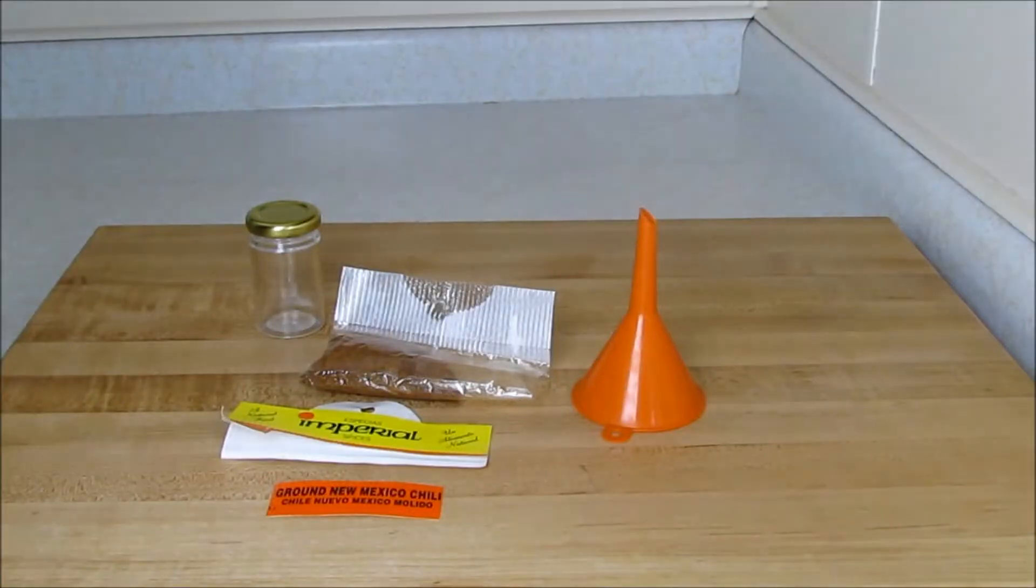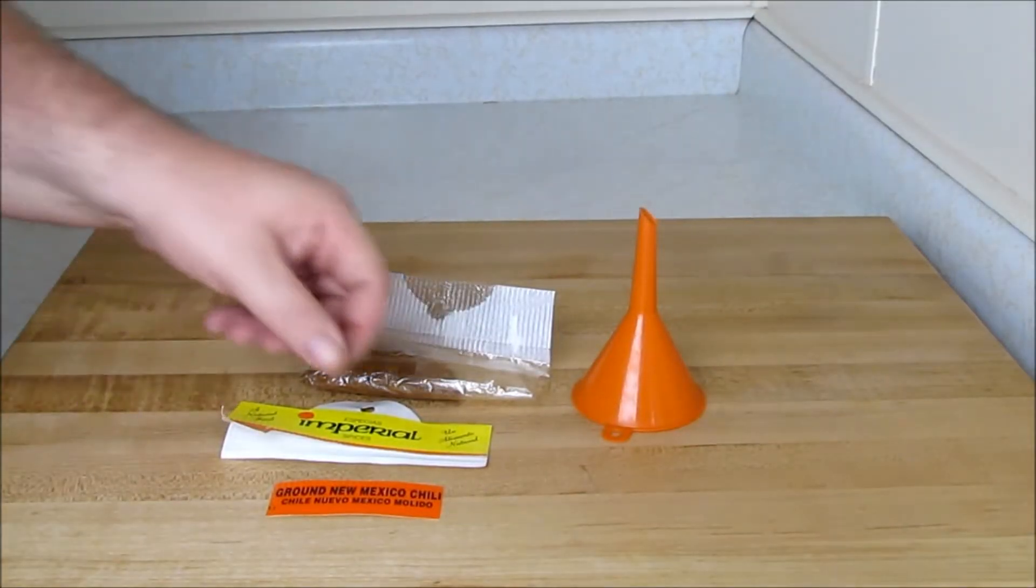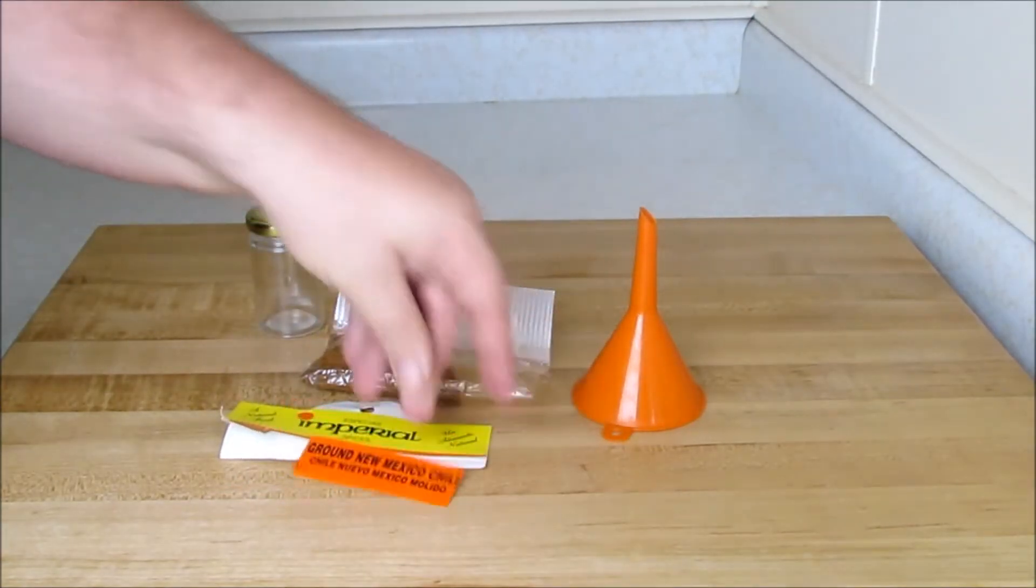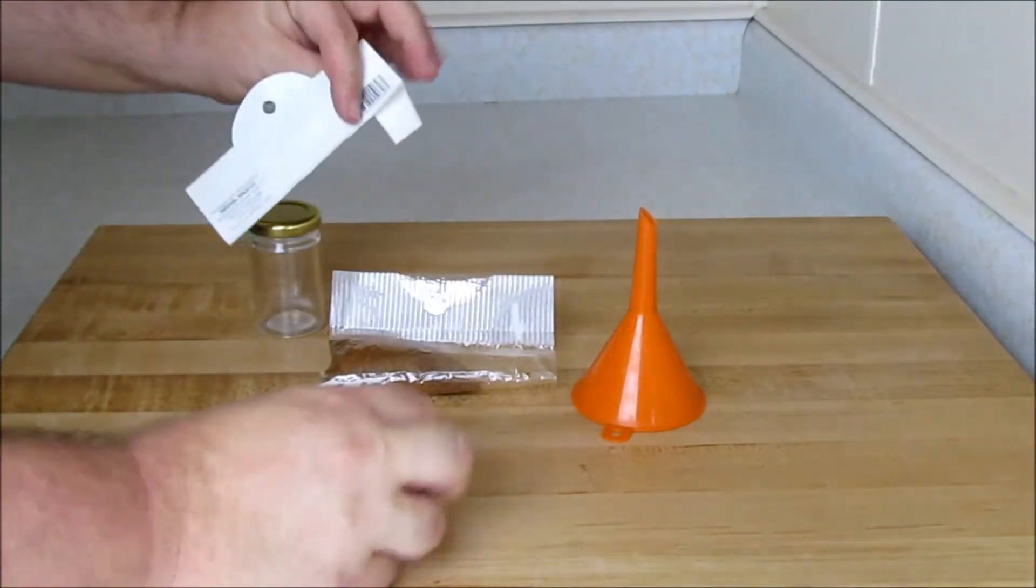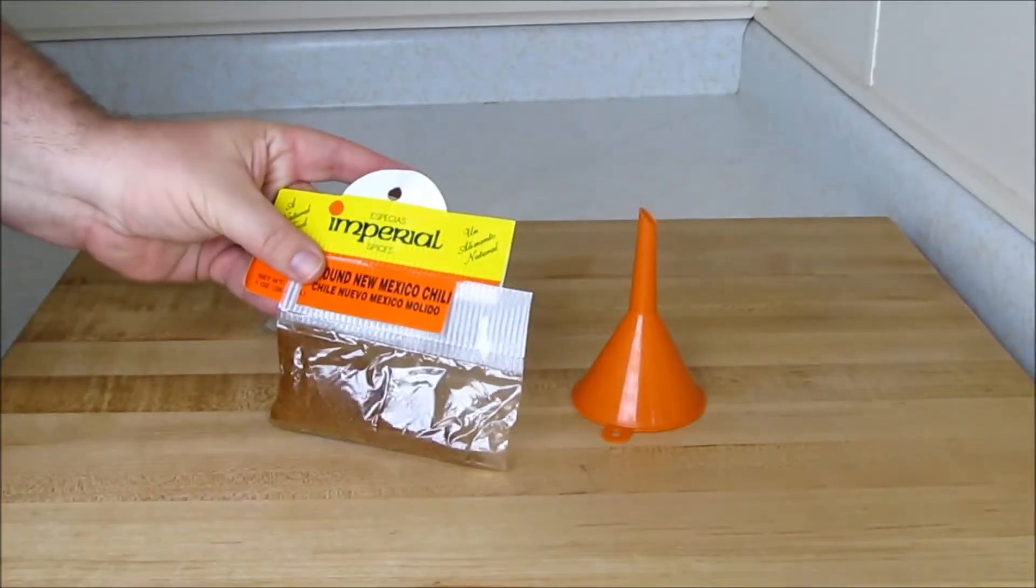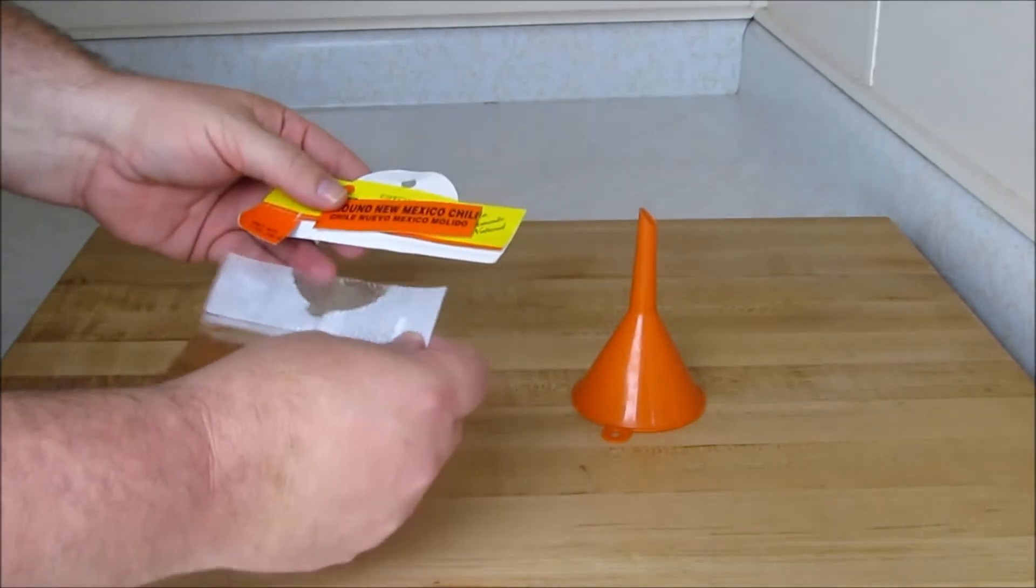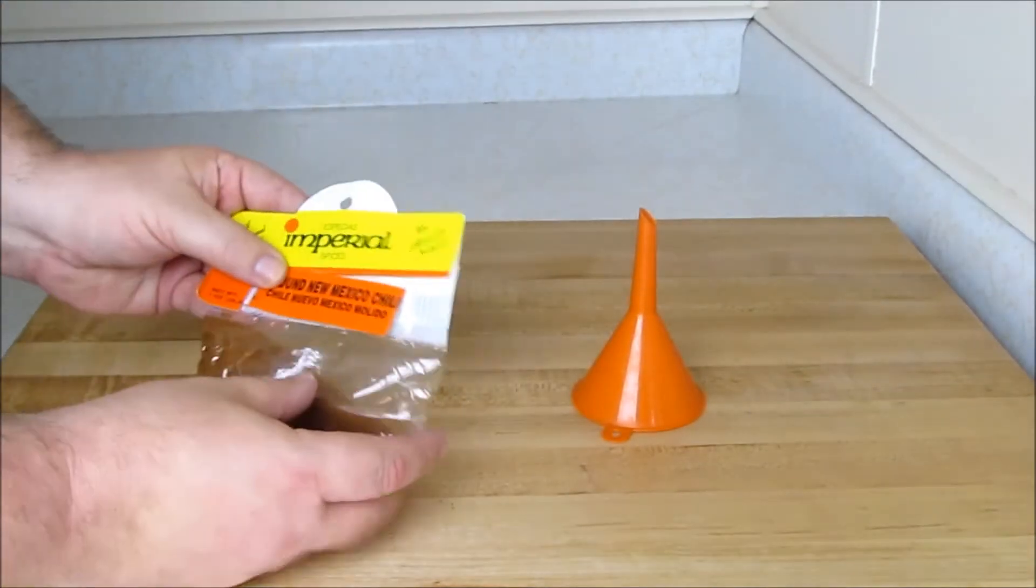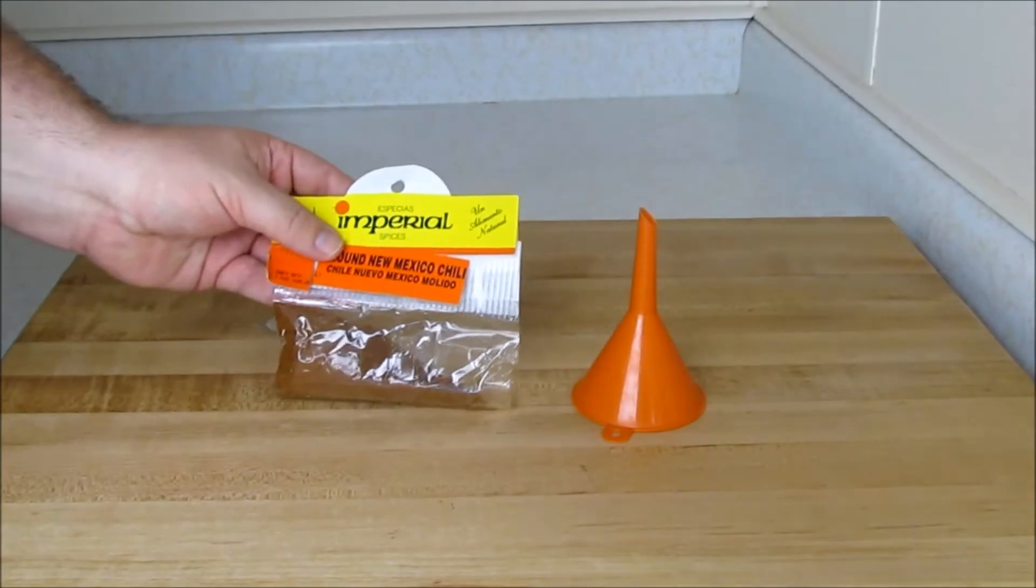So this is something I opened the other night that I needed. It is ground chilies from New Mexico. It came in a spice packet like this. I already got to open this up because then I had the idea to make this video for you guys. So this packet came like this sealed on here and I had opened the corner. So I thought, what a great idea to show you guys what I do in my kitchen.